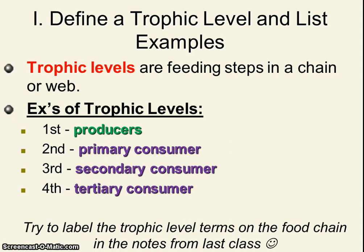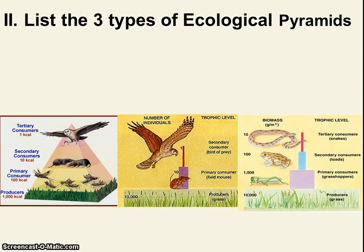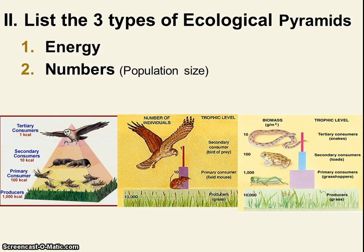So we just went over that from last class's notes. If you have been keeping your notes organized in a spiral like you should, you can add these words and put them into that diagram from before. Now what we're learning today is Roman numeral number two: list three types of ecological pyramids. We're going to talk about energy pyramids, pyramids of population size which we'll call numbers, and also pyramids of biomass, which is the dry weight of the organisms in the area.